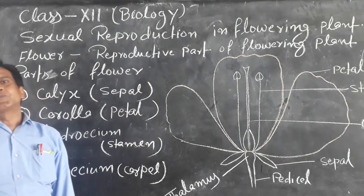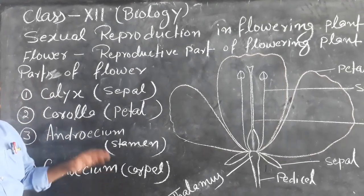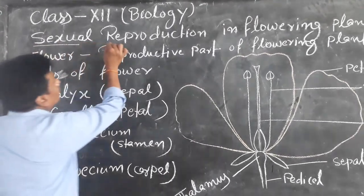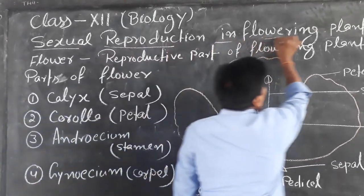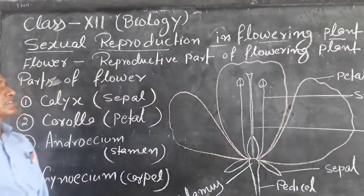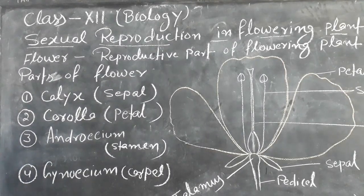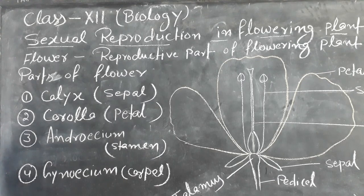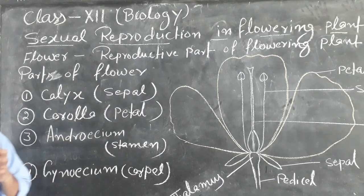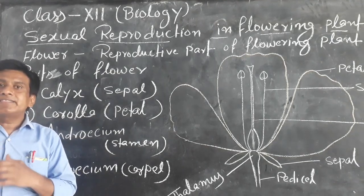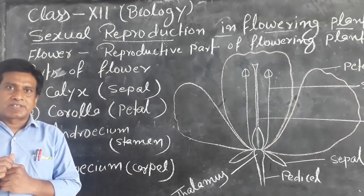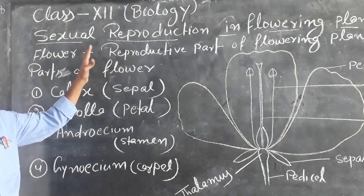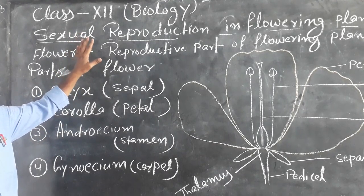Good morning. Today I am going to discuss one of the topics for class 12. My topic is sexual reproduction in flowering plants. Reproduction is one of the important phenomena of living organisms. Reproduction helps to maintain the continuity of life, and sexual reproduction takes part in evolution. So in flowering plants, it is also a very important phenomenon.